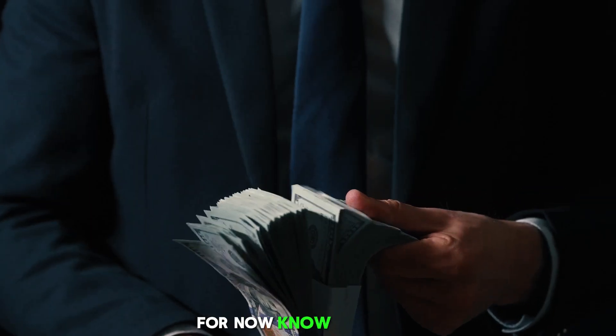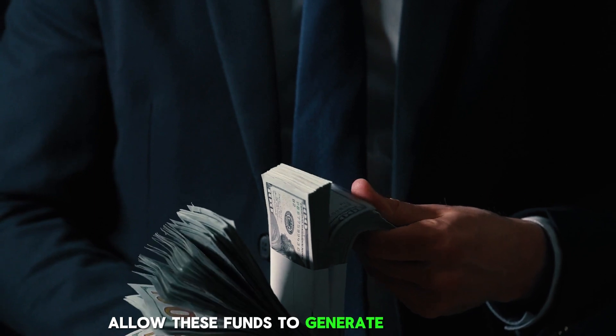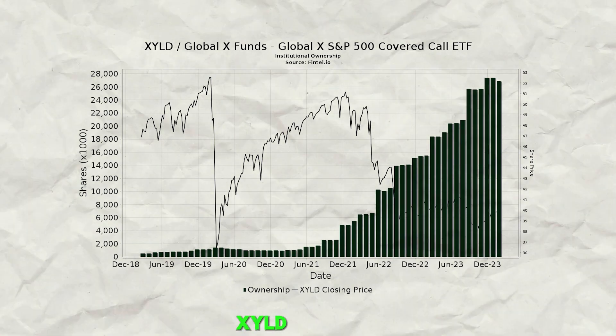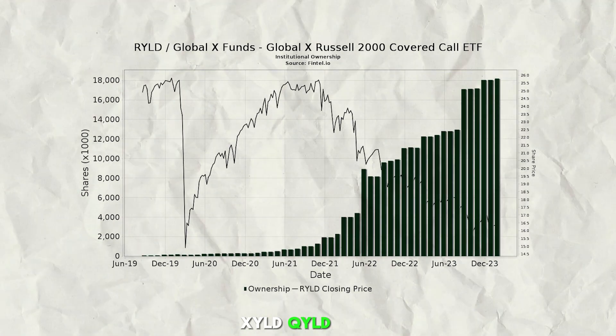For now, know that they allow these funds to generate 8-15% plus dividend yields. Prime examples are funds like XYLD, QYLD, RYLD, and more.